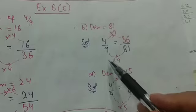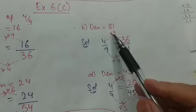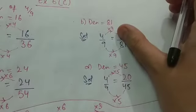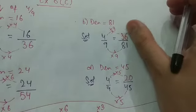So now I multiply by 9. That means I multiply by 9 in the numerator. So it will be 4 multiplied by 9. That is 36.